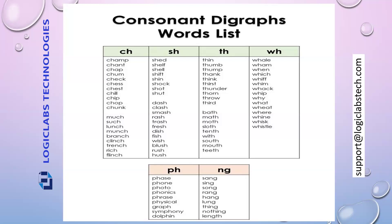Now the 'wh' sound will come: what, when, which, whip. Then the 'ph' sound: face, phone, photographic, physical. Then the 'ng' sound: sang, sing, song, prank, hang, thing, tongue, nothing. This is how the sounds will come related to the consonants.